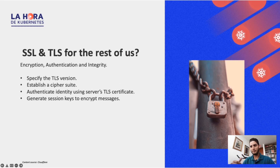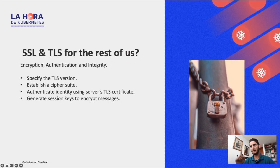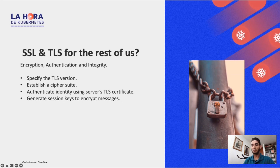Next they need to authenticate — making sure the identity of the server is what it's supposed to be. Because establishing an encrypted connection with the wrong server means you're sending encrypted messages to the wrong place, and they will still be able to decrypt that information. That's where authentication happens using the certificate. Last is the generation of session keys, which I relate to integrity — that's how you ensure that everything subsequently will happen securely and you're still talking to the right server.